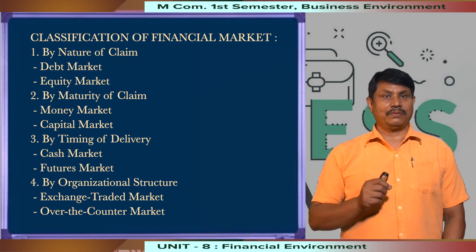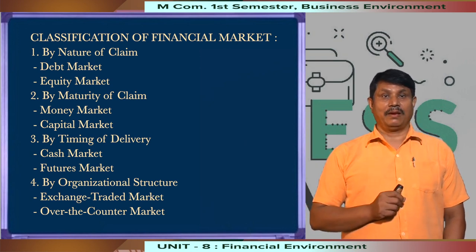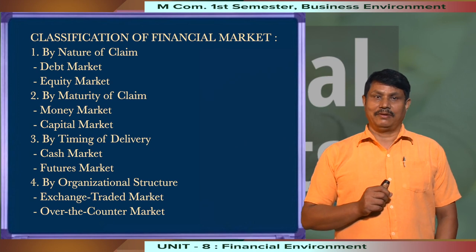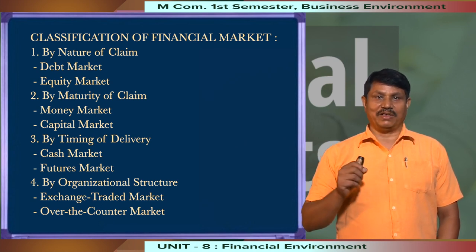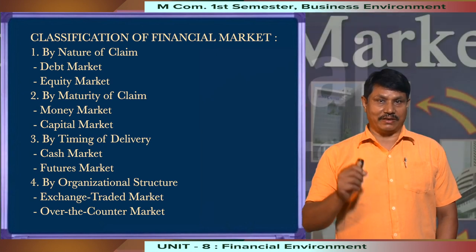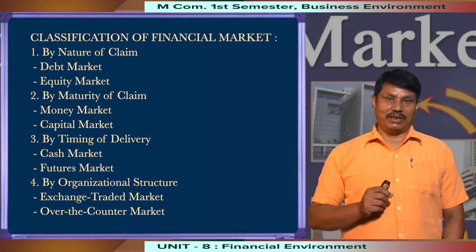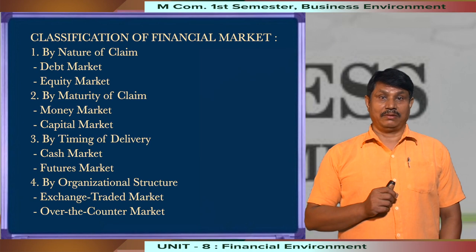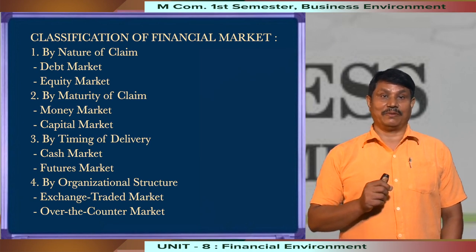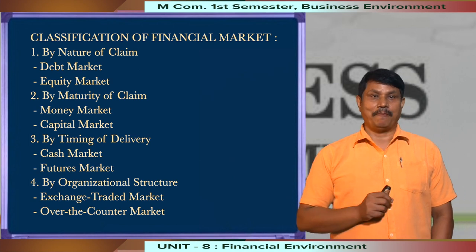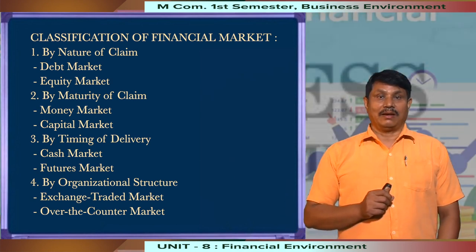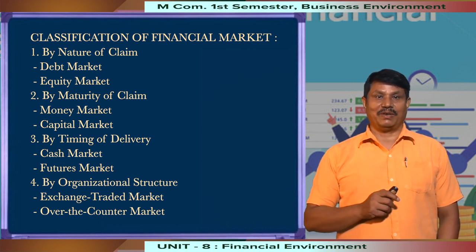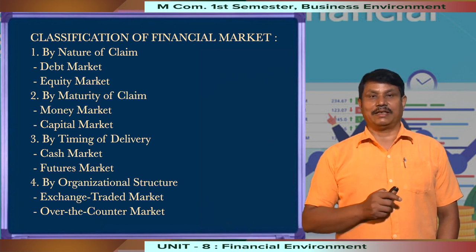From the point of view of maturity of claim, financial markets can be divided into two: money market and capital market. Money market is the market for monetary assets and short-term funds such as treasury bills, certificates of deposit and commercial paper, etc., up to one year duration. The capital market trades the medium and long-term financial assets. We will discuss money market and capital market in the later sessions.